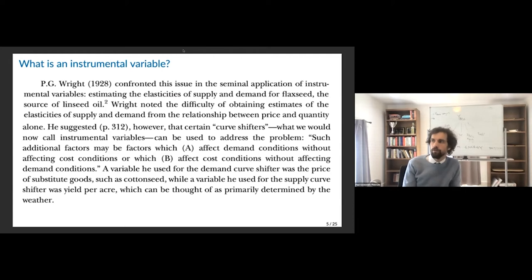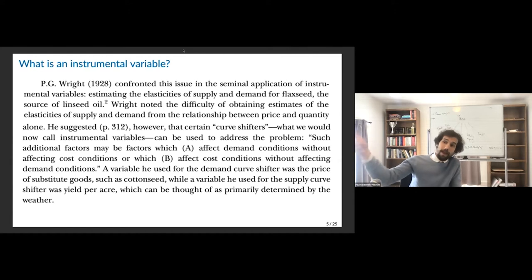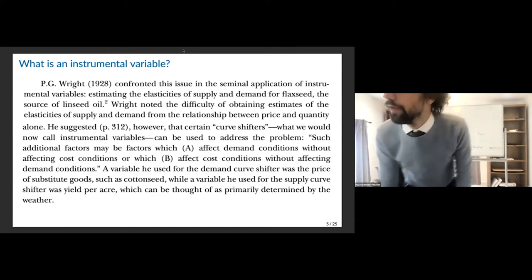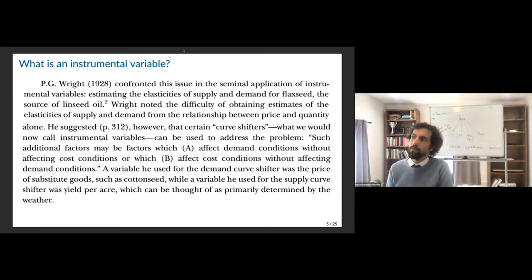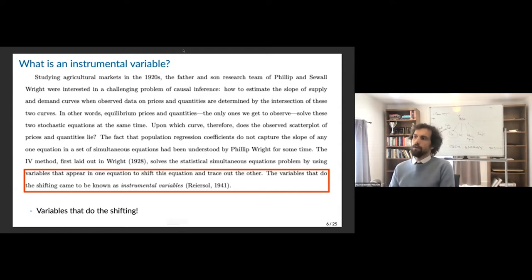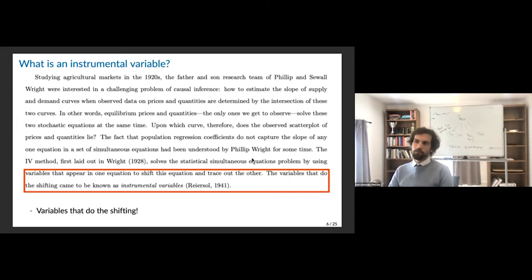In a seminal application estimating supply and demand for flaxseed — the source of linseed oil — the difficulty of obtaining estimates of elasticity from the price-quantity relationship alone was noted. However, certain curve shifters, which we now call IVs, can address this problem. This is from 1928, almost 100 years ago. Such additional factors may affect demand without affecting supply, or affect cost without affecting demand. What was used was substitute goods to shift the demand curve, and yield per acre — primarily determined by weather — to shift supply. The variables doing the shifting became known as instrumental variables.